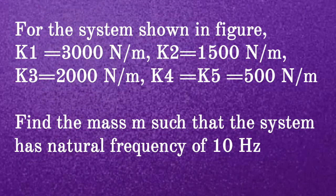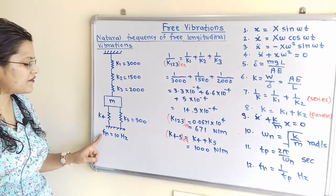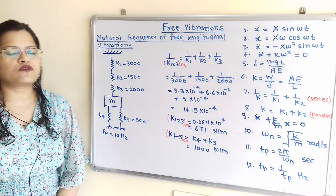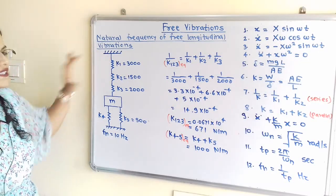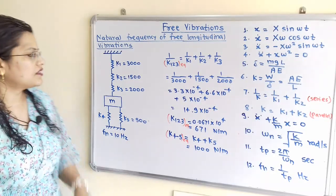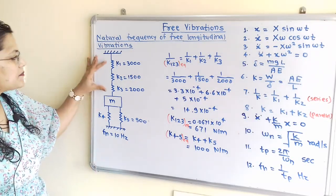Third question: for the system shown in the figure, k1 equals 3000 N/m, k2 equals 1500 N/m, k3 equals 2000 N/m, and k4 equals k5 equals 500 N/m. Find mass m such that the system has a natural frequency of 10 Hz. We first find the equivalent spring stiffness. Springs k1, k2, and k3 are connected one after another, so they are in series.